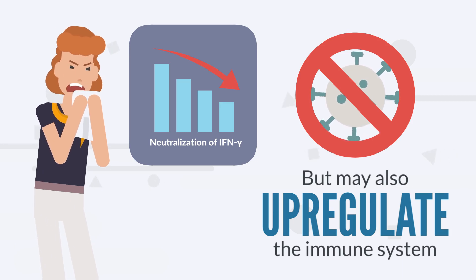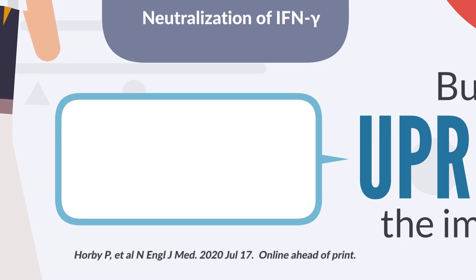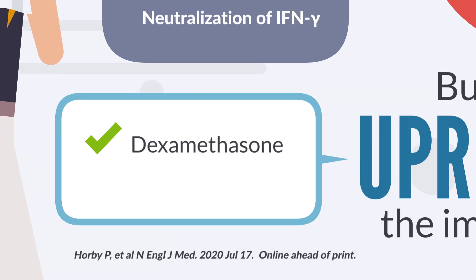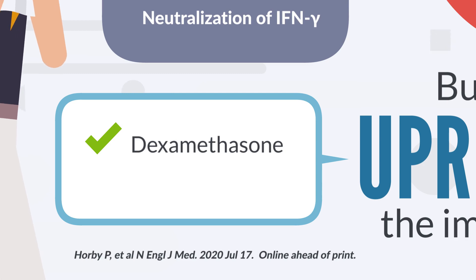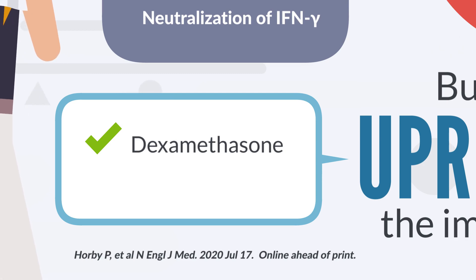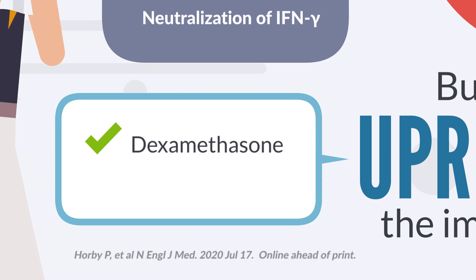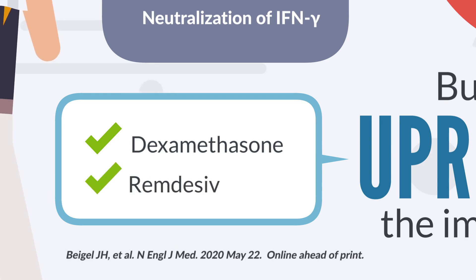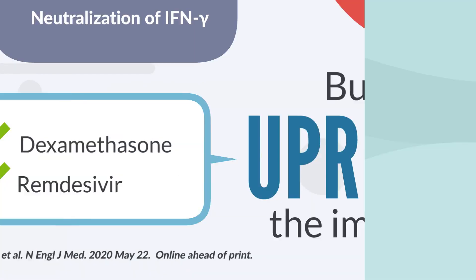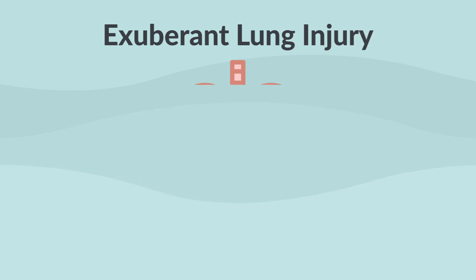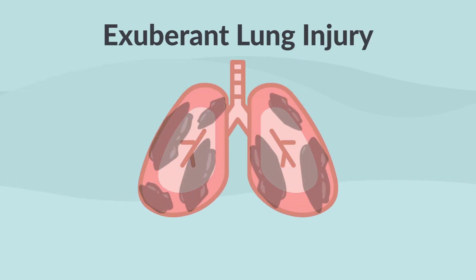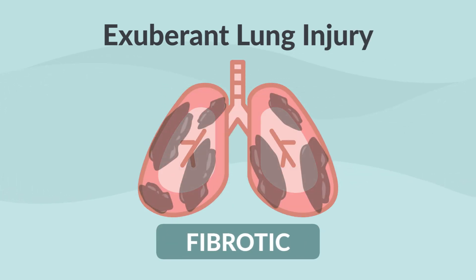Similarly, inhibiting IL-6 may protect against an exuberant immune response. Dexamethasone, a corticosteroid, has been shown to reduce 28-day mortality among those with COVID-19 on oxygen or mechanical ventilation. The antiviral remdesivir has been shown to improve the time to recovery in adults hospitalized with COVID-19. Given the exuberant lung injury, the lungs in some patients ultimately become fibrotic, and lung transplantation has been utilized as salvage therapy.